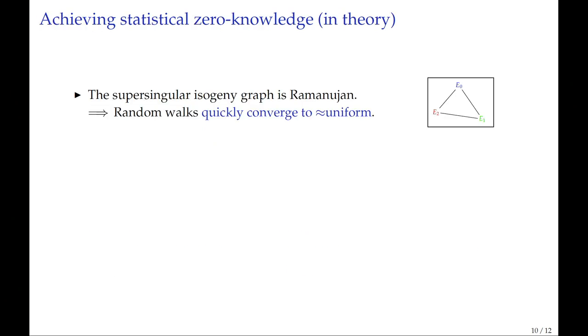The reason is that whenever the prover reveals phi prime, there is a computational assumption that the curve E2, together with the associated kernel generator of phi prime, is indistinguishable from a random curve with a random kernel generator. So how do we achieve statistical zero knowledge? We know that the supersingular isogeny graph, the graph of all supersingular curves connected by an isogeny, is Ramanujan. This means that it has very good expander properties, and relatively short walks quickly converge to something close to uniform.